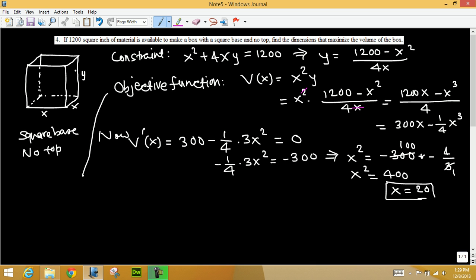So x equals 20, and y we can find. Length is 20, width is 20, and the height we can find from the constraint. That's the answer. Now the question is, why does x equals 20 maximize the volume? For that we find the second derivative.